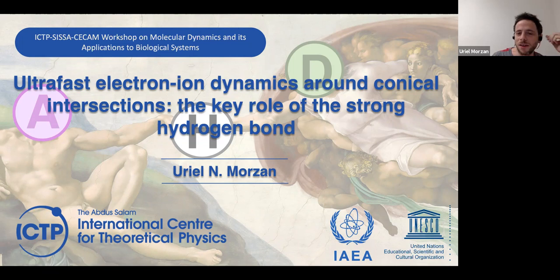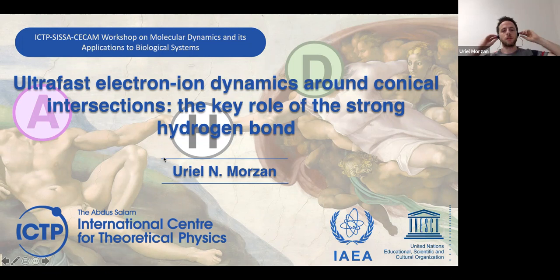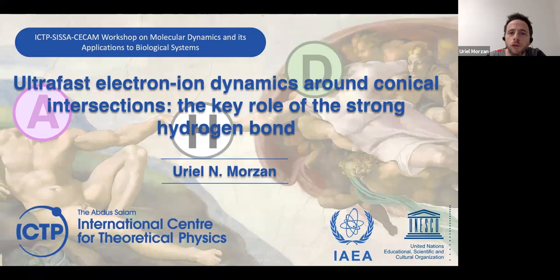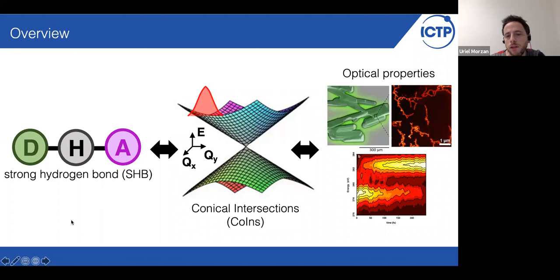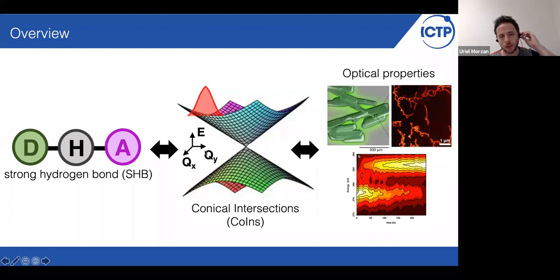Thank you very much. I'm very happy to be here and thank you very much for inviting me to give this presentation. I will talk today about some very recent results that I'm very excited about. I will talk about the strong electron bonds and their connections with ultrafast dynamics around conical intersections. My goal in this talk is to establish a general connection between the strong electron bonds and the position and the shape of conical intersections. And then I want to mention how this is related with some very interesting optical properties.